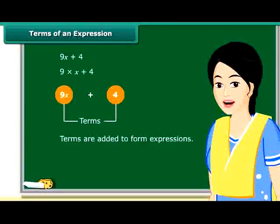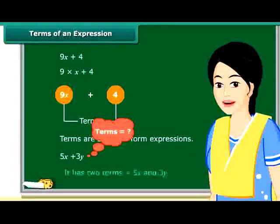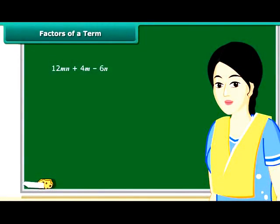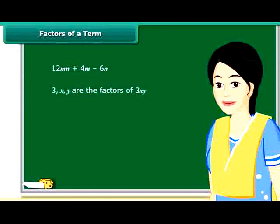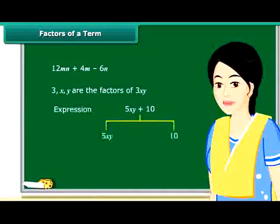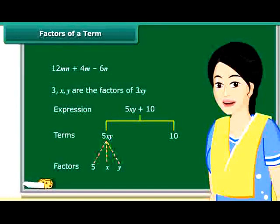How many terms are there in 5x plus 3y? It has two terms. A term is a product of its factors. But what are these factors? Look at this term — we say that 3, x, and y are the factors of the term 3xy. We can also represent 5xy plus 10 by a tree diagram. The dotted lines are used here for factors and continuous lines for terms.